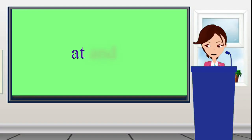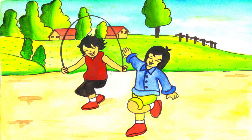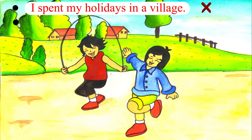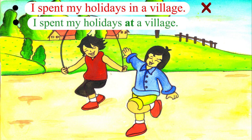AT and IN. AT is used before the names of small towns and villages. It is incorrect to say 'I spent my holidays in a village.' The correct sentence is: I spent my holidays at a village.